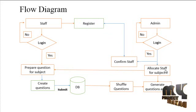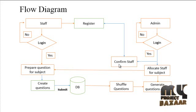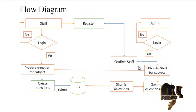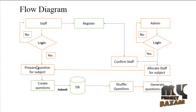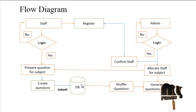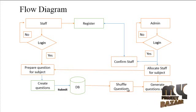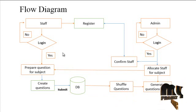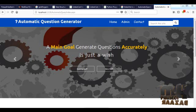After confirmation, the admin will allocate a subject for each staff — that is, the admin decides which subject the staff will set questions for. After successful allocation, the staff will prepare questions for that allocated subject, create the questions, and submit them to the database. The admin will then view all the questions, shuffle them, and generate the question paper as a PDF. This is the overall flow of our project.